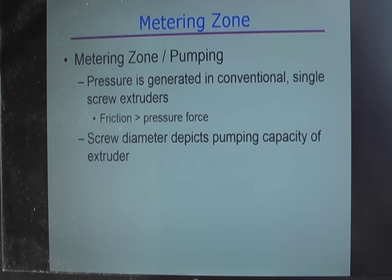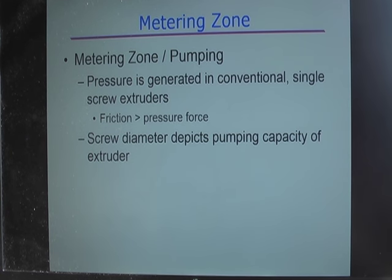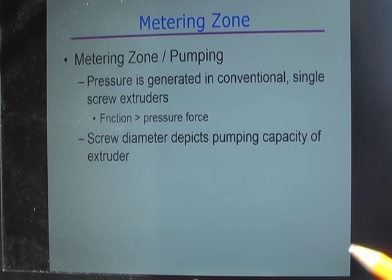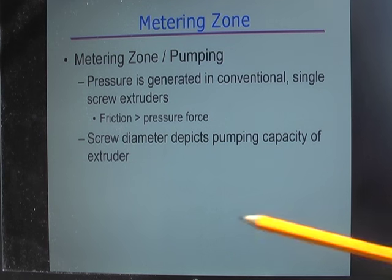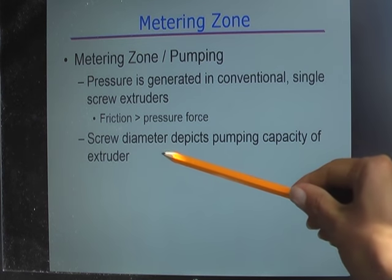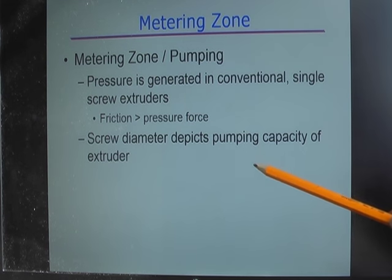The last zone is the metering zone, or pumping zone. Again, you need to make sure the friction force is higher than the pressure force to ensure material keeps moving forward. The screw diameter typically indicates the pumping capacity of your extruder.